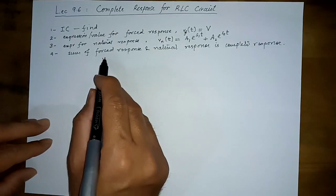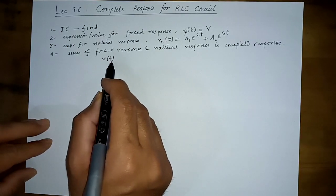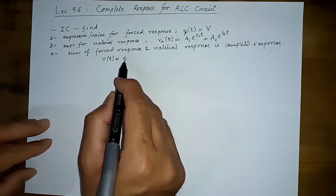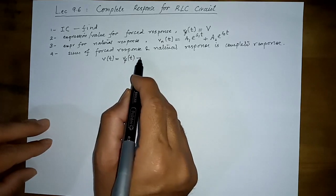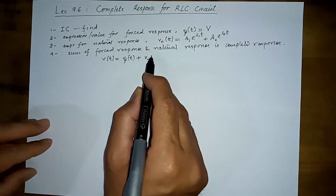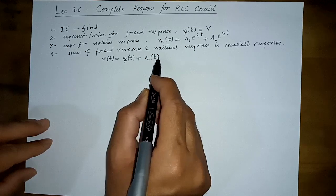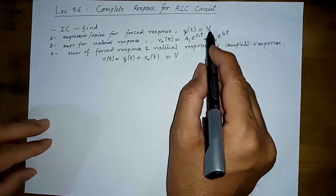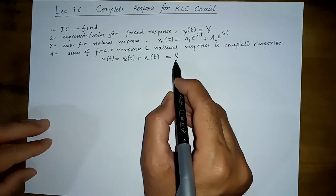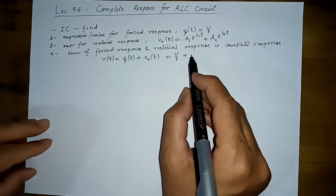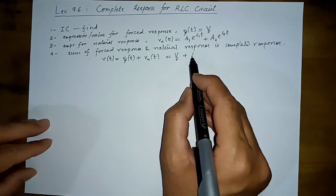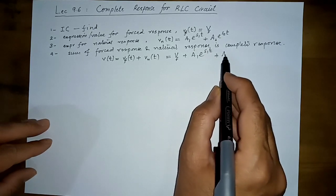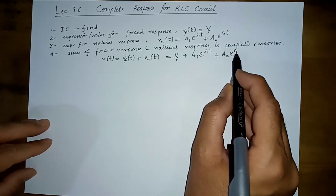The complete response is the forced response plus the natural response. So if we are trying to find some voltage, that voltage would be the forced response part plus the natural response part — something like the final value of voltage plus A1·e^(S1·t) plus A2·e^(S2·t).